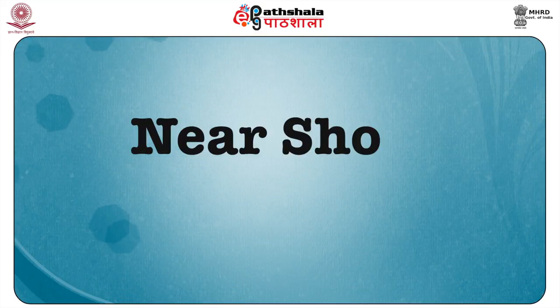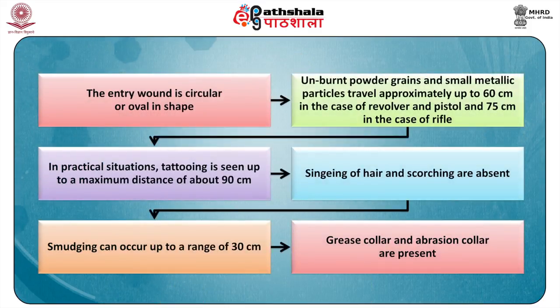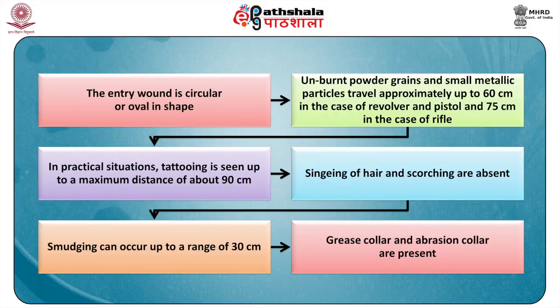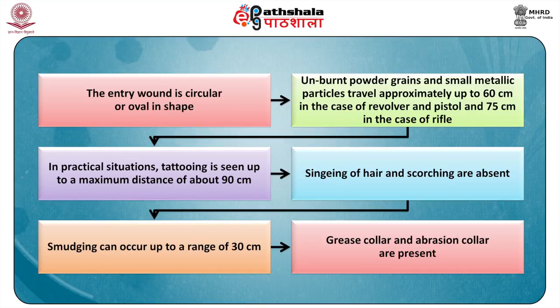A near shot means the firearm was fired outside the range of the flame but within the range of the powder blast. The entry wound is circular or oval in shape. Unburnt powder grains and small metallic particles travel approximately 60 cm in the case of a revolver and pistol, and up to 1 meter in case of rifle. In practice, tattooing is seen up to a maximum distance of 90 cm. Singeing of hair and scorching are absent. Smudging can occur up to a range of 30 cm. Grease collar and abrasion collar are present.